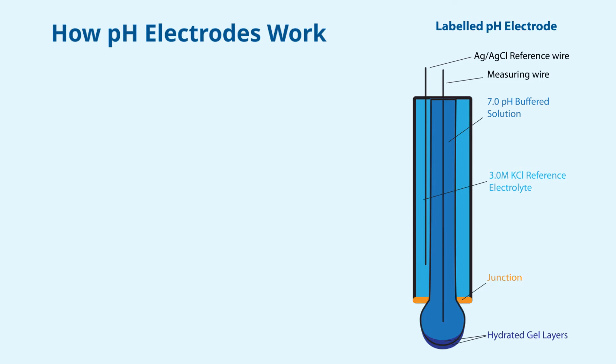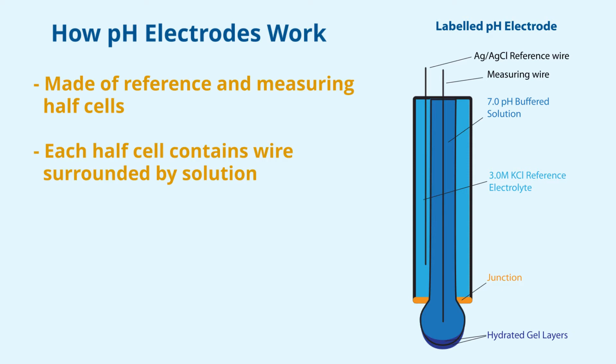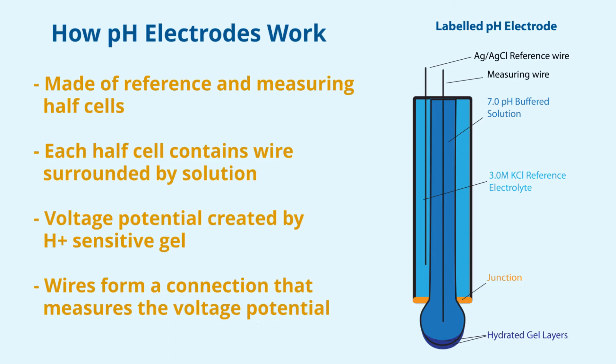A pH electrode is made of a measuring half cell and a reference half cell, each of which contains a wire surrounded by solution. A voltage potential is created by the hydrogen ion sensitive gel on the glass bulb, and the wires on either side measure that difference. That is as much as you need to know for this video, but we have an article linked in the description that can explain the concepts further if you are curious.